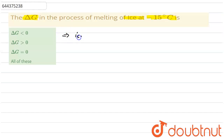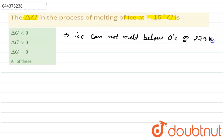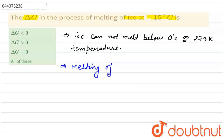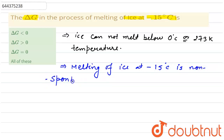We know very well that ice cannot melt below 0 degree Celsius or 273 Kelvin temperature, which means melting of ice at minus 15 degree Celsius is a non-spontaneous process.